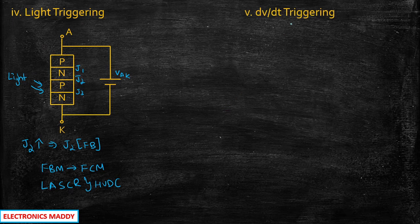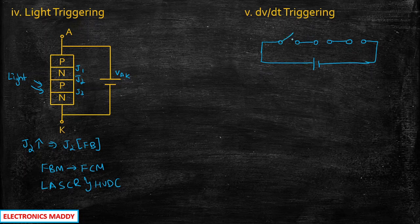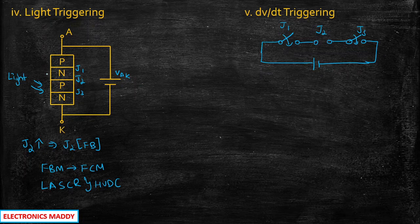The fifth method is dV/dt triggering. Consider an equivalent circuit representation of an SCR with respect to its junctions. There are three junctions, and connecting it to positive and negative terminals of the battery, junction J1 is short-circuited and junction J3 is short-circuited because we are already applying voltage VAK. But we need to ensure junction J2 is also short-circuited since it is acting as an open switch. If you carefully observe, J2 will actually act as a capacitor.